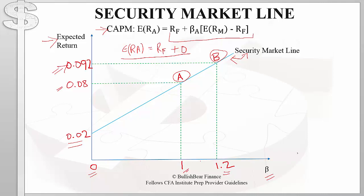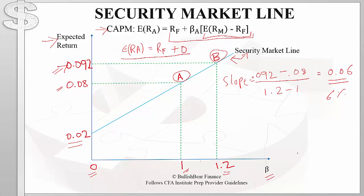As we saw, the slope of the security market line gives the market risk premium. To compute it, we simply select two points on the line and compute the slope. Using points B and A, we can compute the slope — or market risk premium — as 6%.